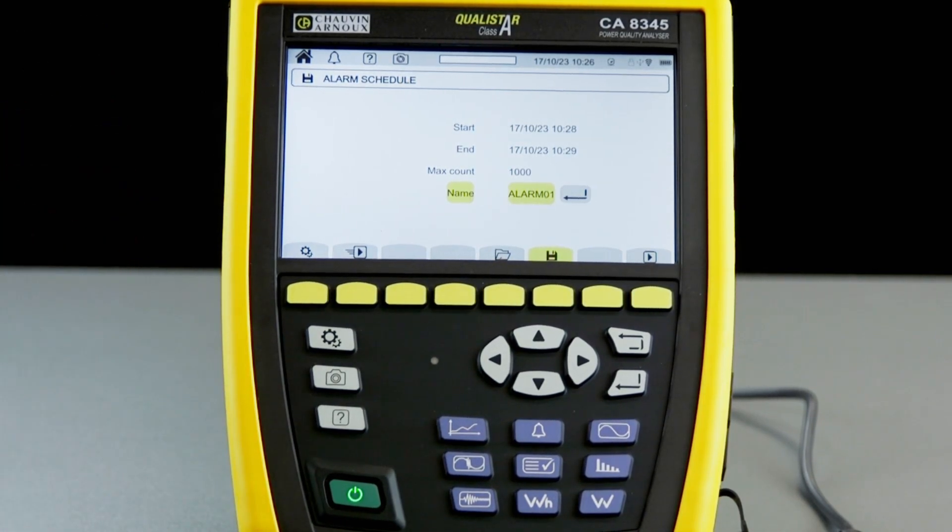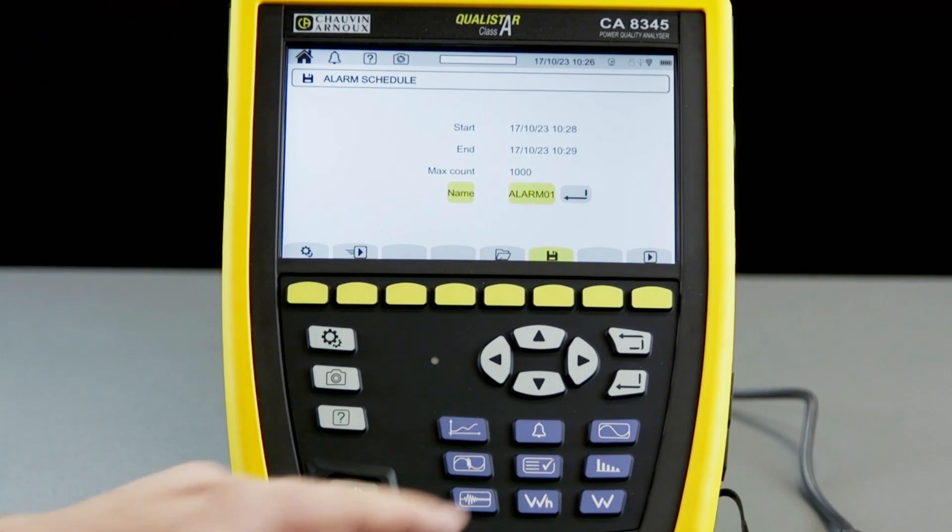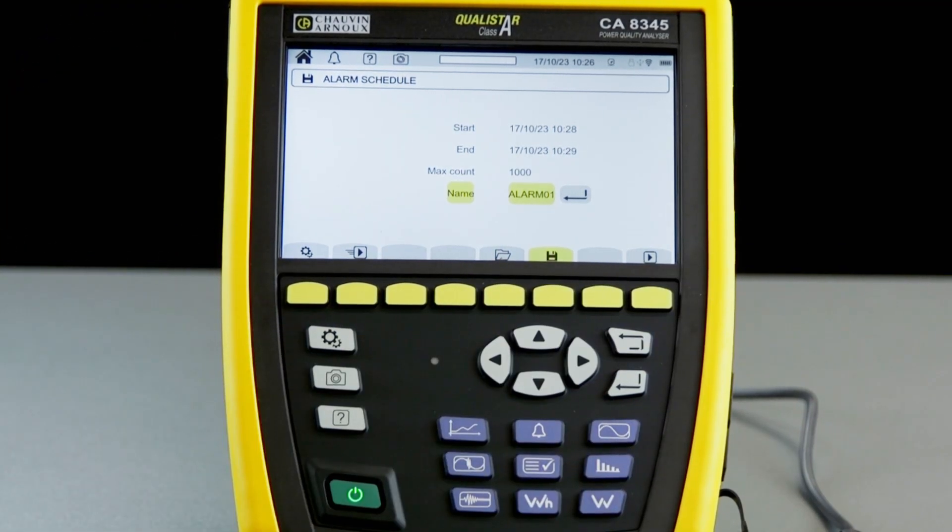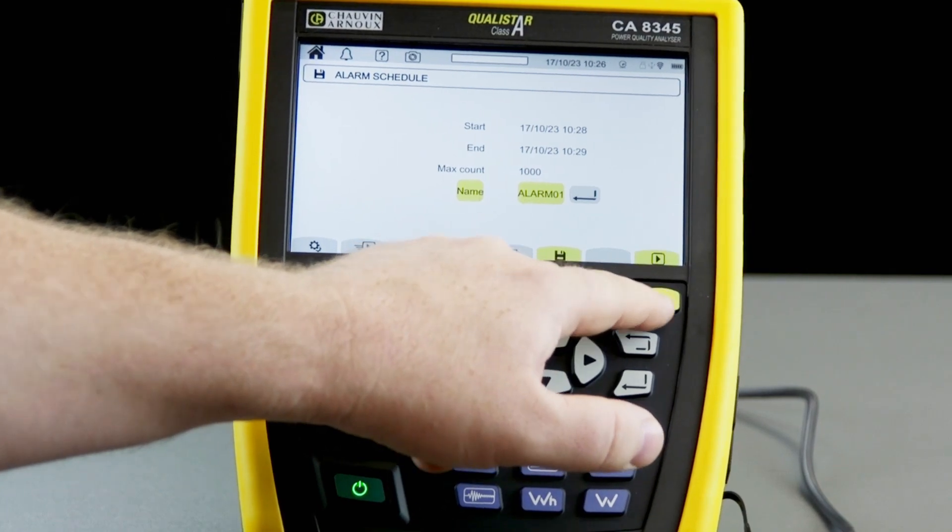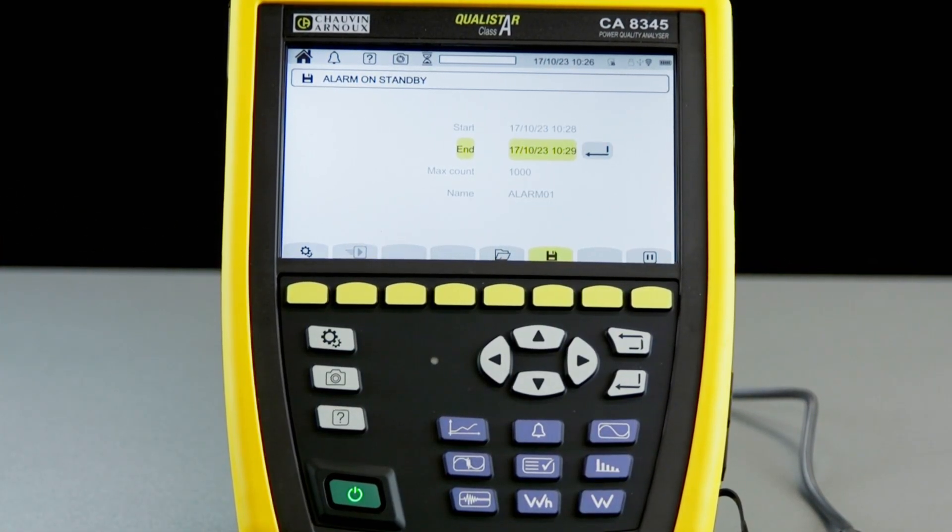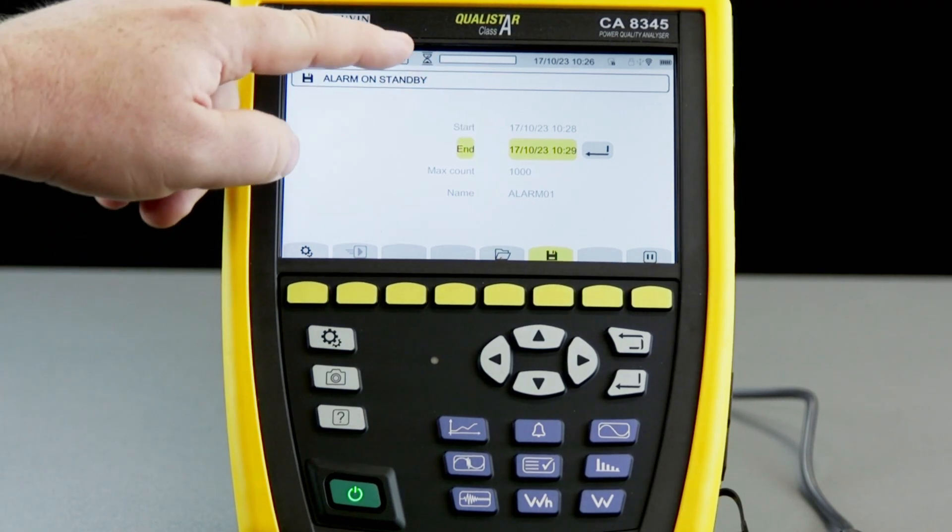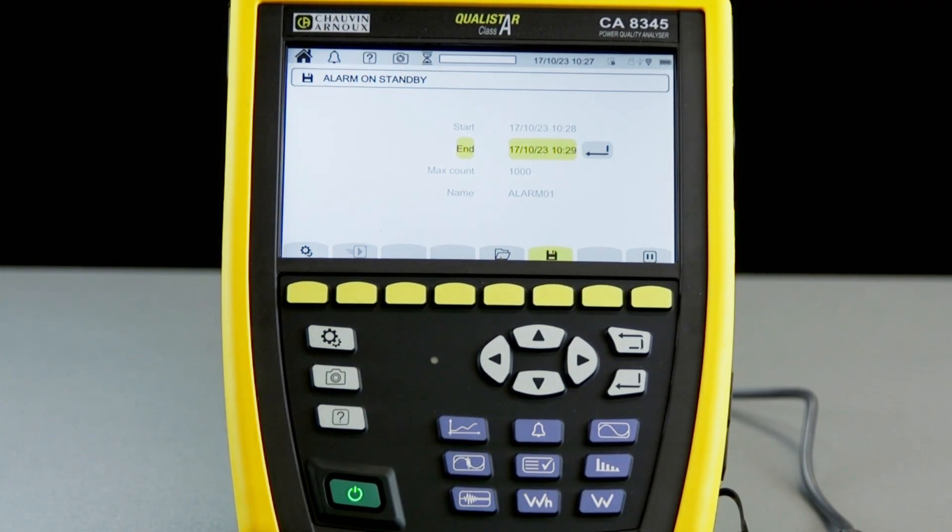Once that's all entered and the CA-8345 is happy, we'll see a black play icon and we can simply press that to start the session. This will wait until the start time. We can see a little egg timer at the top of the screen, so it's ready to start the session when it reaches the appropriate time.